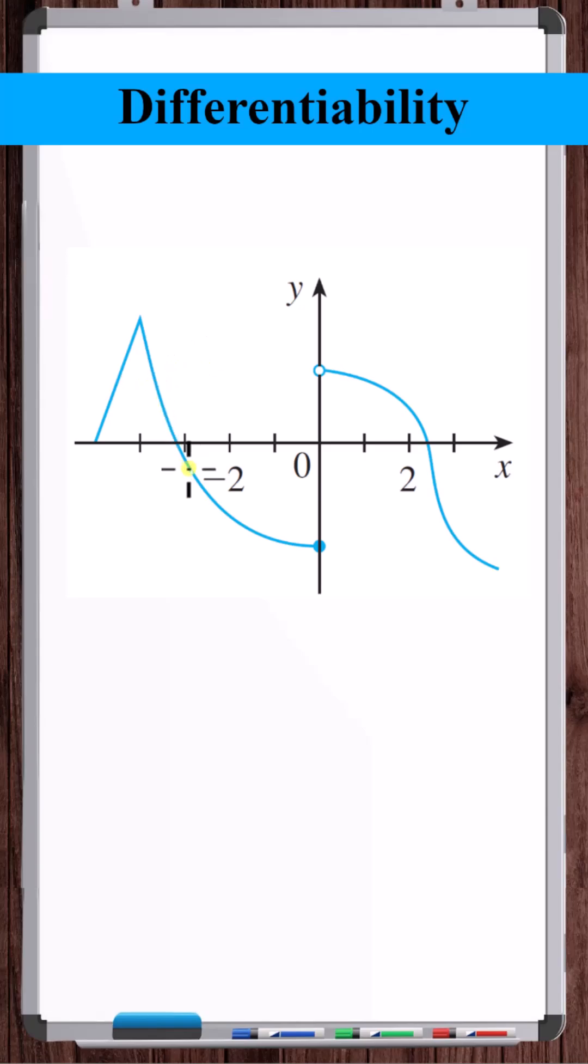Where is this function not differentiable? Let's look for places where we don't have a smooth curve. If we look here, the function is continuous here. You can draw the curve without picking up your pen off the page, but it's not differentiable.